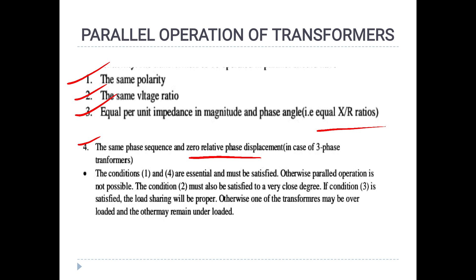The 4th condition is same phase sequence and zero relative phase displacement. The main condition for equal load sharing is the third point — equal per-unit impedance in magnitude and phase angle. Per-unit impedance and phase sequence must be the same, and we must have equal X/R ratio. This ensures equal load sharing between the parallel transformers.